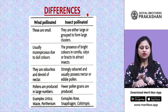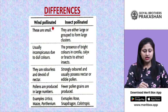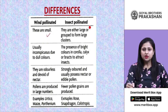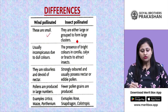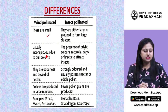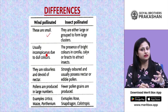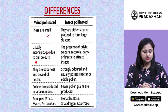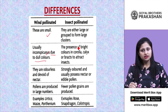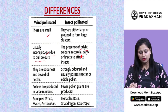Differences between wind-pollinated and insect-pollinated plants: wind-pollinated plants are generally small, while insect-pollinated plants are either large or grouped to form large clusters. Wind-pollinated plants are usually inconspicuous due to their dull colors, while insect-pollinated plants are bright in color in parts like corolla, calyx, or bracts to attract insects.